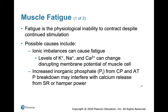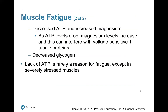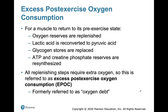Muscle fatigue is the physiological inability to contract despite continuous stimulation. Possible causes include ionic imbalances, increased inorganic phosphate from creatine phosphate and ATP breakdown interfering with calcium release from the sarcoplasmic reticulum, decreased ATP or increased magnesium, and decreased glycogen. Lack of ATP is rarely the reason for fatigue except in severely stressed muscles. To return to pre-exercise state, we need to replenish oxygen, convert lactic acid back to pyruvic acid, replace glycogen stores, and resynthesize ATP and creatine phosphate — all requiring extra oxygen, referred to as excess post-exercise oxygen consumption, formerly called oxygen debt.